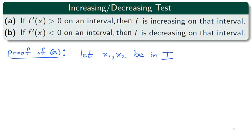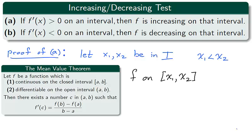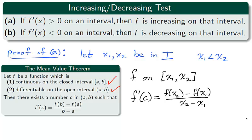To prove that this test works, we will make use of the mean value theorem. f is defined on the interval [x1, x2], and because this interval is inside of I, f is differentiable on the interval. Because f is differentiable on the interval, it is also continuous on the interval. Therefore, we can use the mean value theorem. On the interval [x1, x2], we can find a value c which satisfies the mean value theorem.